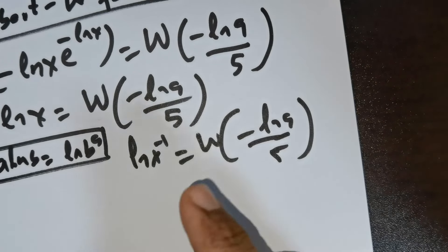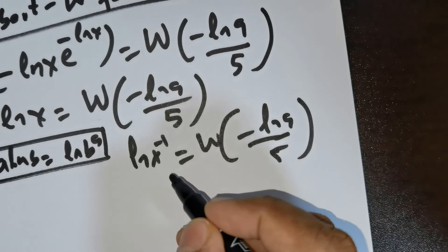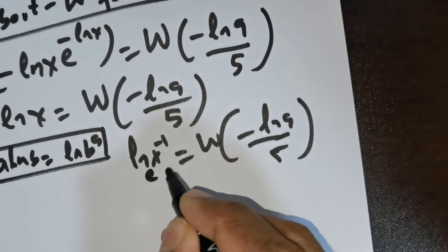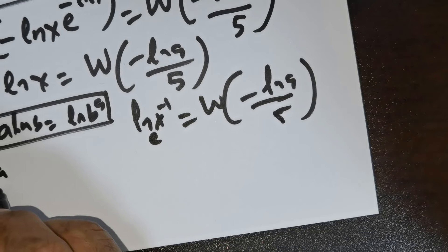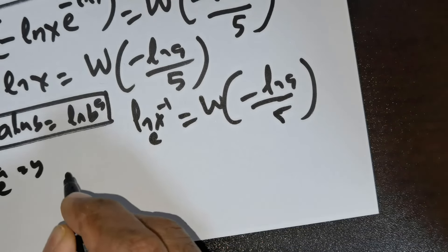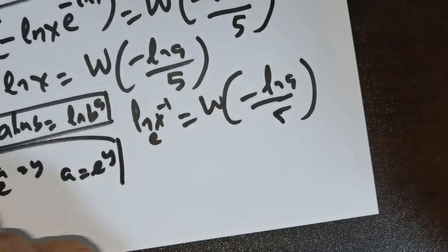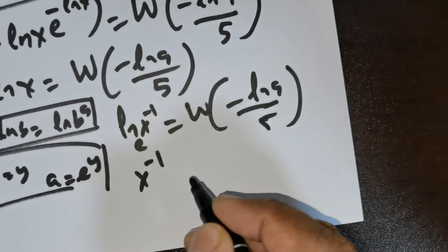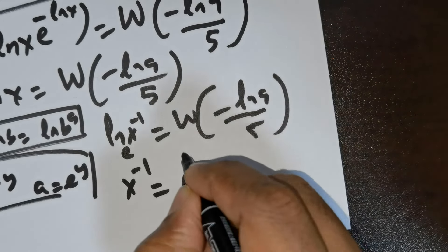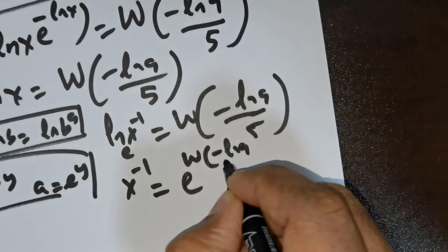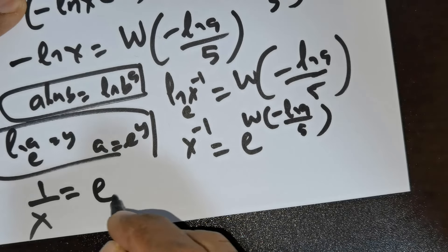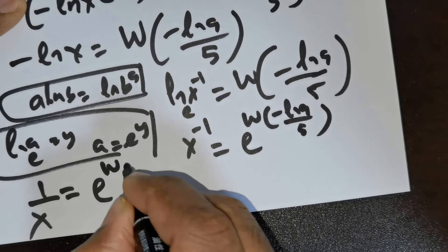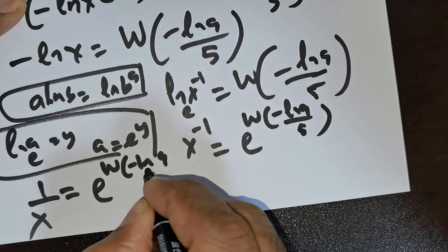What I want to do is have the base e. I have the formula: ln a to the base e is equal to y, which means a is equal to e raised to the power of y. So this is x to the power of negative 1 is equal to e raised to the power of W of negative ln 9 divided by 5. Bringing x to the power of negative 1 down, you get 1 over x is equal to e raised to the power of W of negative ln 9 divided by 5.